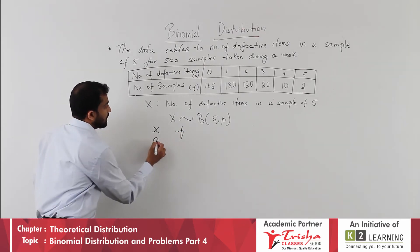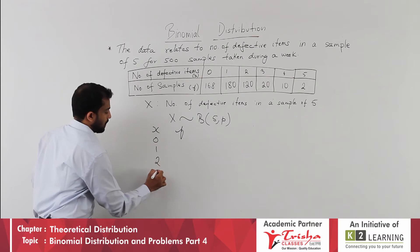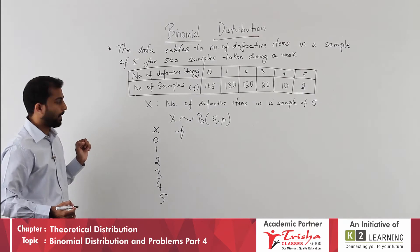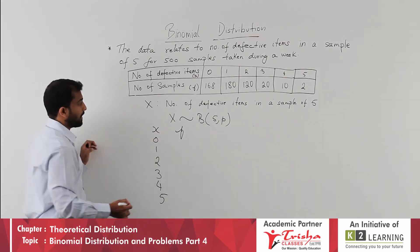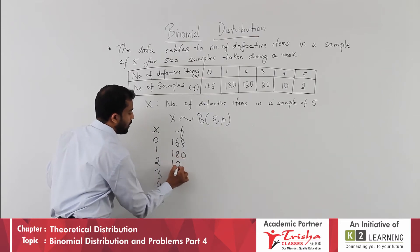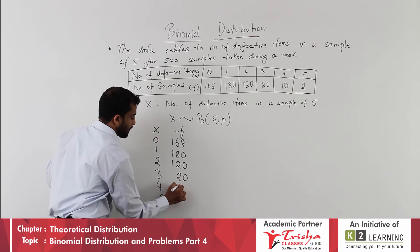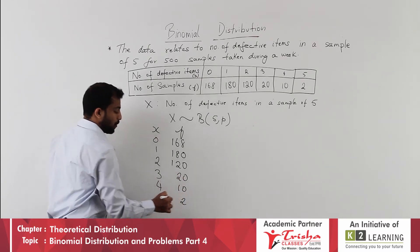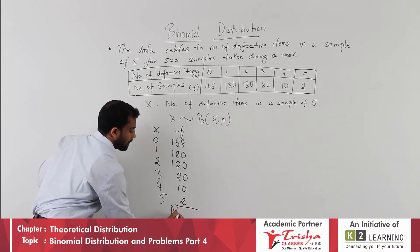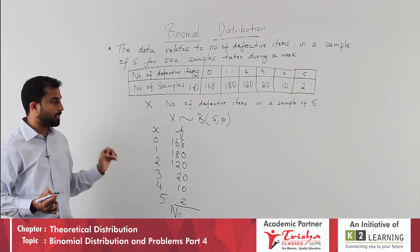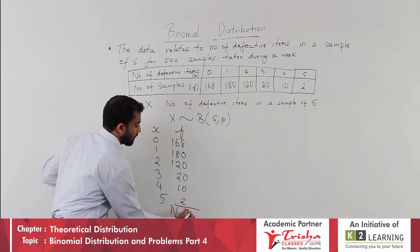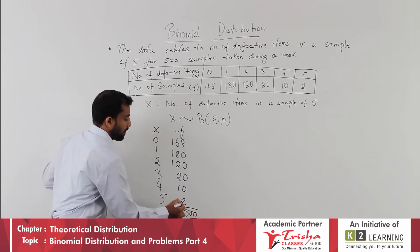The data is: x = 0, 1, 2, 3, 4, 5 and the corresponding frequencies are 168, 180, 120, 20, 10, and 2. When we total the frequencies, we get N = 500.